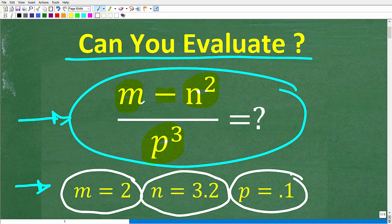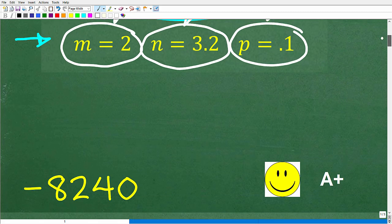I'll show you the correct solution in just one second, and of course I'm going to evaluate this expression step by step. So once again, m minus n squared over p to the third power. What is this all equal to when we plug in these values for these variables? Well, let's take a look at the answer. The correct answer here is negative 8,240.